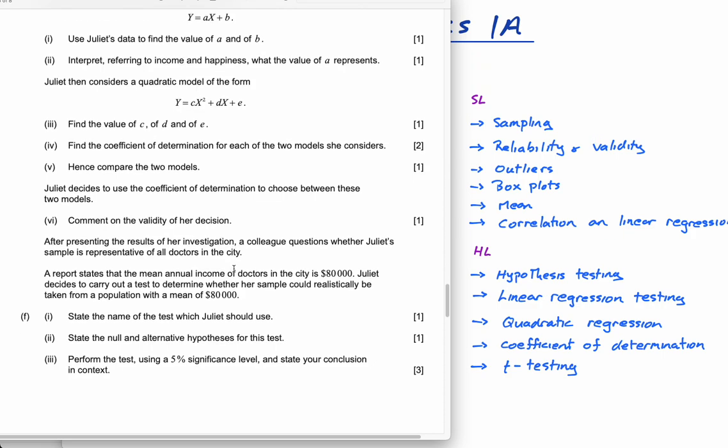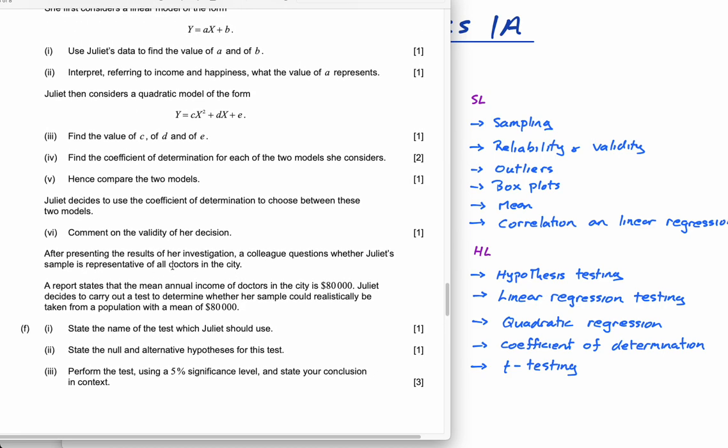Nearly done. So after presenting the results of her investigation, a colleague questions whether Juliet's sample is representative of all the doctors in the city. A report states that the mean annual income of doctors is 80,000. So Juliet decides to carry out a test to determine whether her sample could realistically be taken from a population with a mean of 80,000. State the name of the test which Juliet should use. This is a t-test. For those of you doing HL, if you've done this topic, this will make sense. Those of you in SL, no reason why you can't look at t-testing if you want to go a bit further and get those really, really high grades. And then you perform the test, state your conclusion and context.